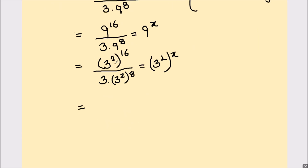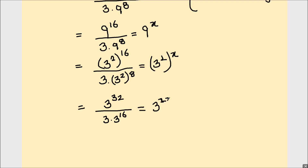Next we are going to multiply the indices. So 3 raised to power 16 times 2 is 32, and in the denominator we have 3 times 3 raised to power 8 times 2 is 16, equals 3 raised to power 2x. Here we have used the law of exponents: a raised to power m, whole raised to power n, equals a raised to power mn.